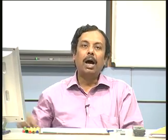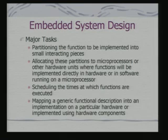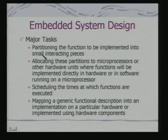We were discussing the different techniques being used for embedded system design. In the last class, we looked at task graphs and how high-level transformations can be applied to the task graph to make it more amenable for hardware-software co-design. Today we shall continue our discussions on hardware-software co-design. The major tasks to recapitulate are partitioning the system function into small interacting pieces.